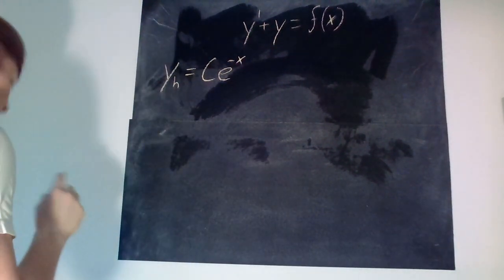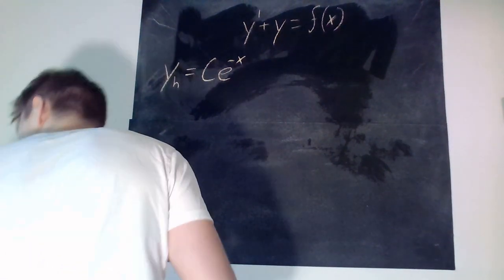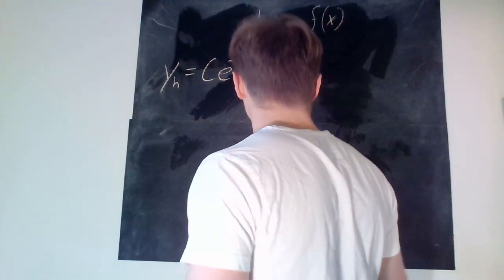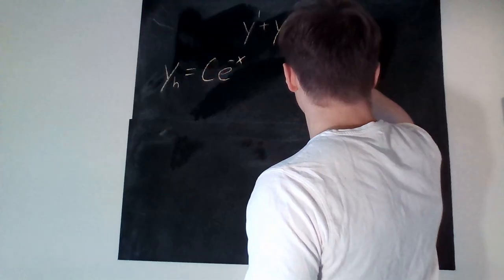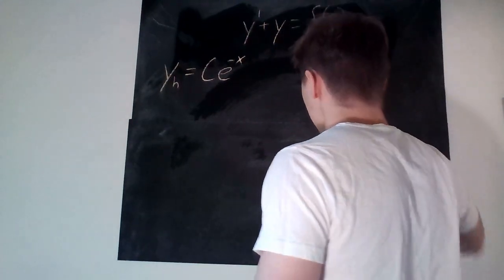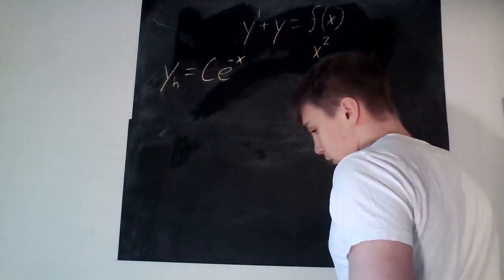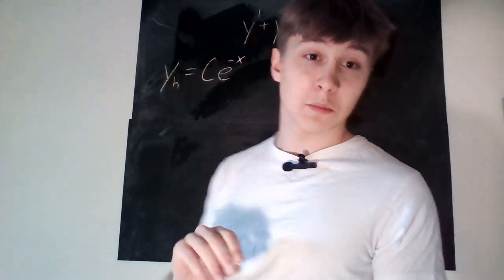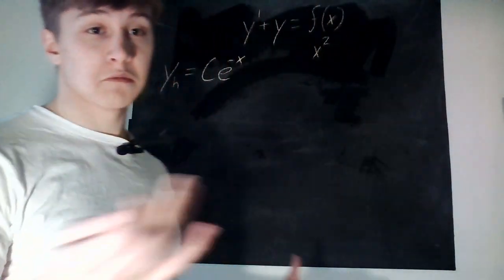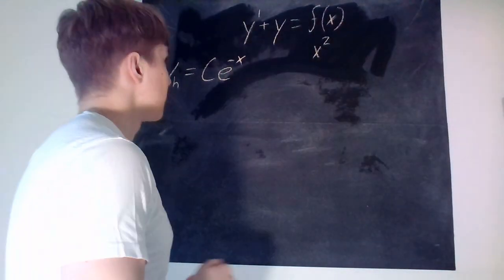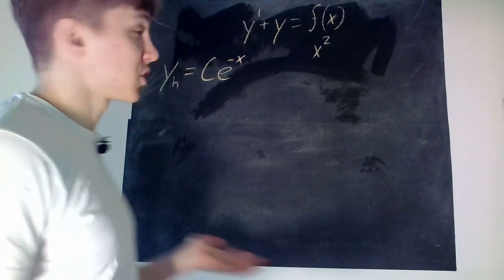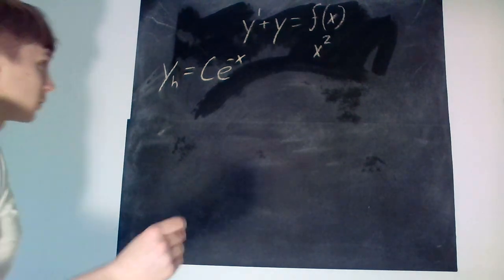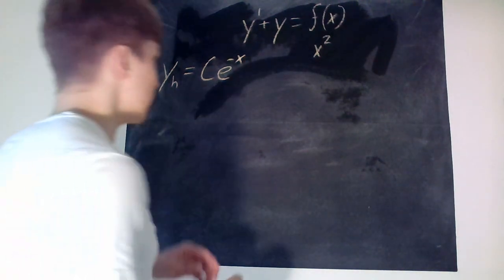Now that we have that done, we can look at the first case. The first case is if f of x is equal to x squared. What do we do then? Well, of course, you just use some kind of polynomial with degree two.